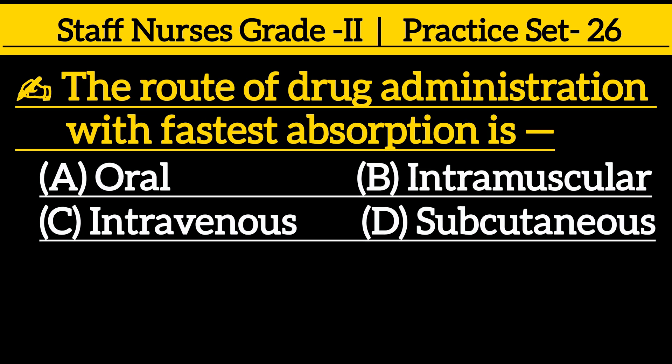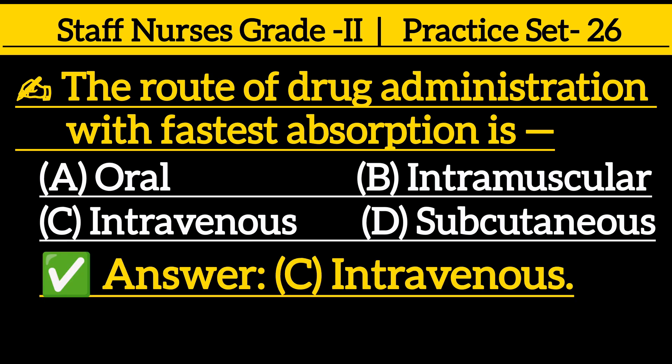Next question: the route of drug administration with the fastest absorption is — option A: oral, option B: intramuscular, option C: intravenous, option D: subcutaneous. The correct answer is option C: intravenous.